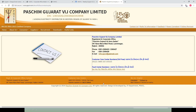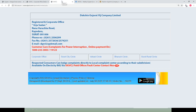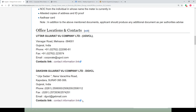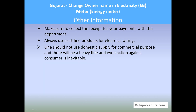Online resources: all the links provided here will give direct access to the websites used to complete this procedure, and these are also provided as links at appropriate places on our wikiprocedure page to save your valuable time. Other information: make sure to collect a receipt for your payment with the department. Always use certified products for electrical wiring. One should not use domestic supply for commercial purposes — there will be a heavy fine and action against the consumer. Hope this video helped you; don't forget to give us a like and subscribe. Thank you for visiting wikiprocedure.com.